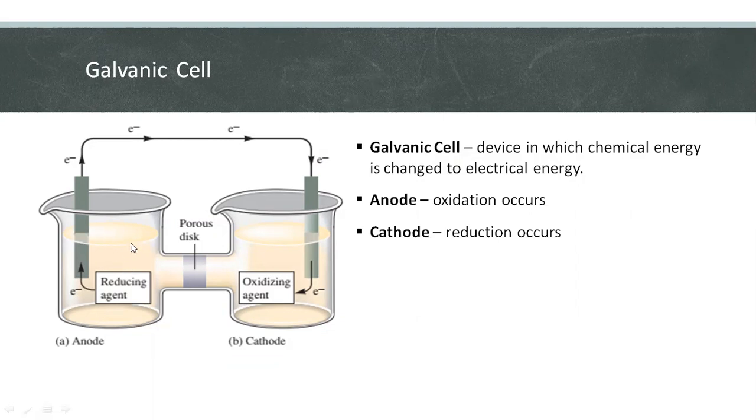In the case of permanganate and iron, permanganate is our anode and iron is the cathode compartment.